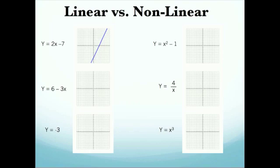Our first graph is y equals 2x minus 7, and as you can see here, this creates a line that goes up to the right, and it does create a line so this one is linear.